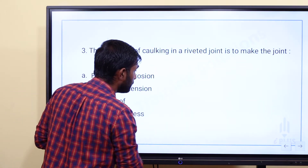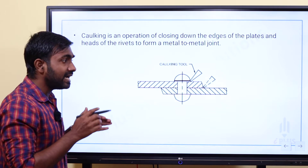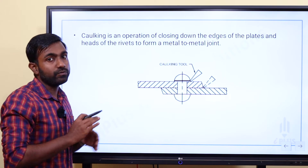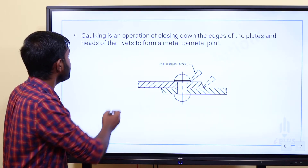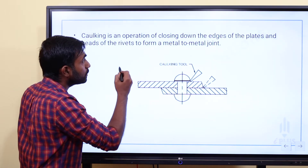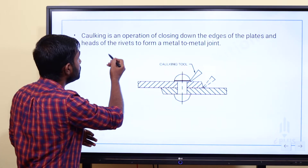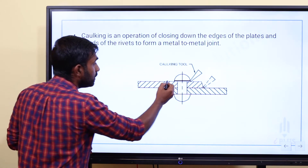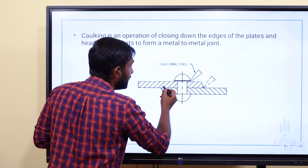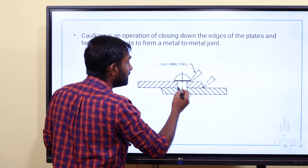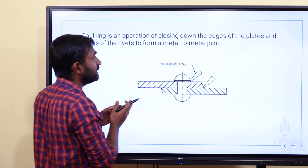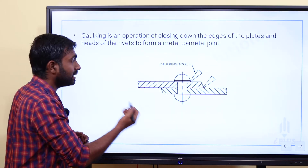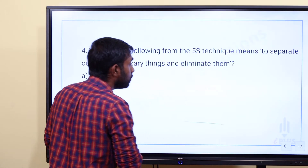In terms of the caulking operation, we use a caulking tool. The caulking tool works on the edges of the plate and the head of the rivet to form a metal-to-metal joint. The caulking tool closes down the joint to make it leak proof.